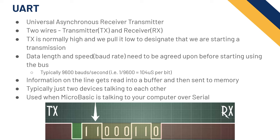The 'asynchronous' means there's no clock line standardizing the communication. All UART devices have two wires: one to transmit and one to receive. These are flipped on the other side — one side's transmit goes into the other side's receive.